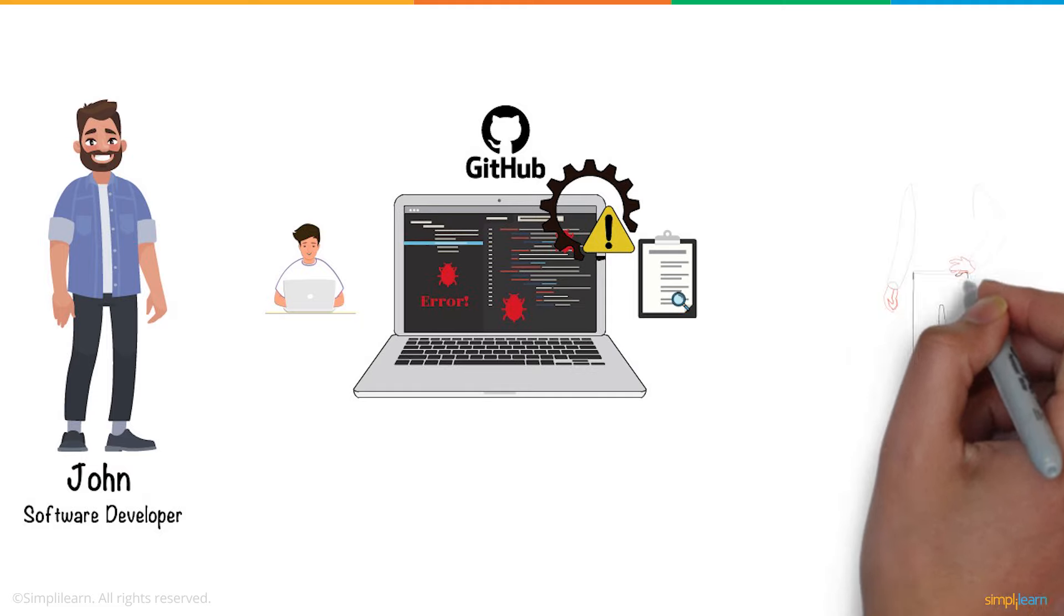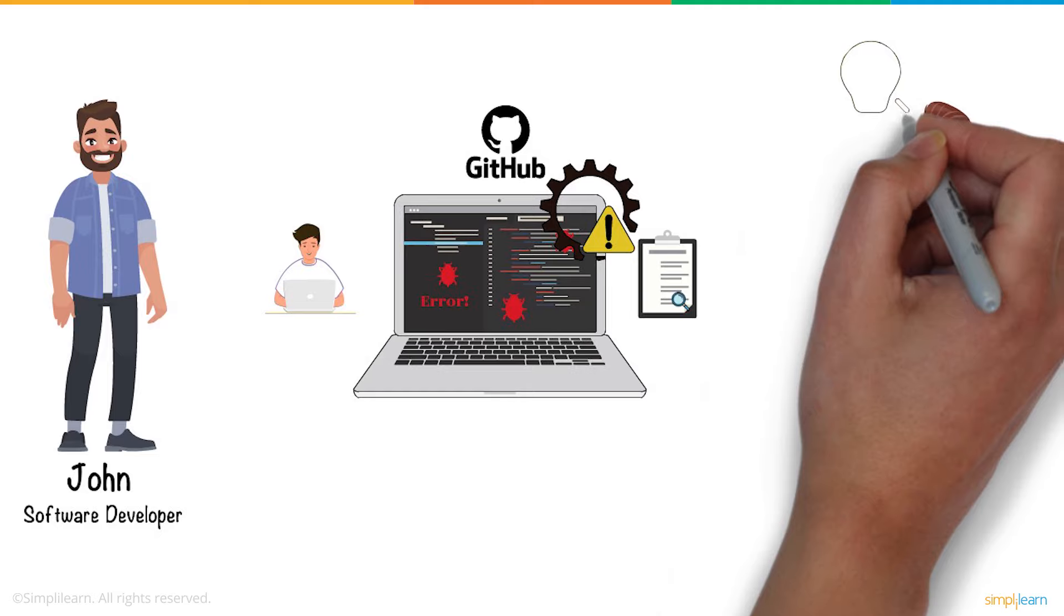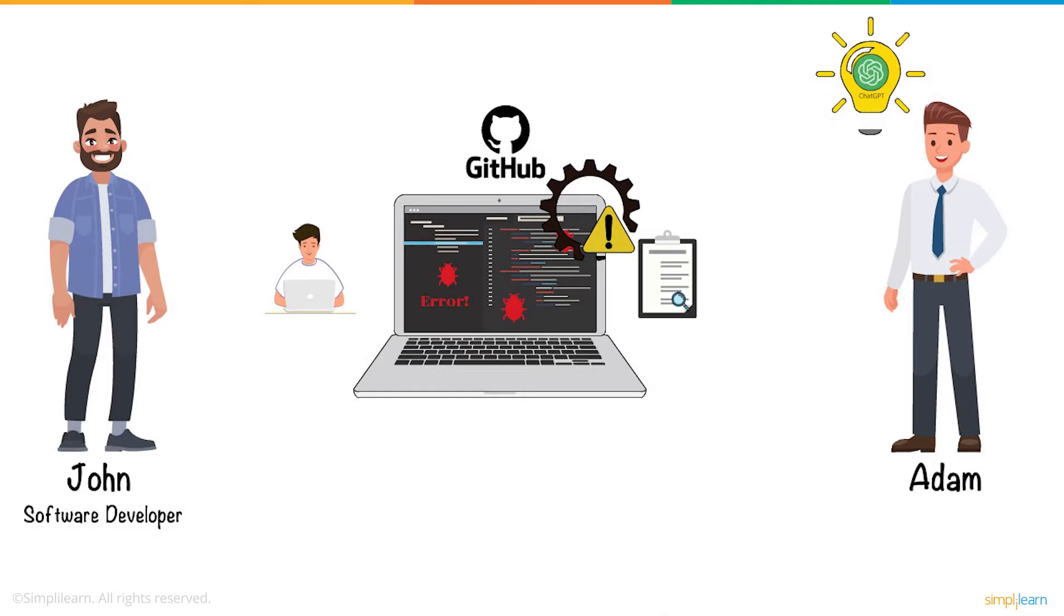Desperate to find the solution, John meets his friend Adam. Adam comes up with an idea of an artificially intelligent and practical solution called ChatGPT.